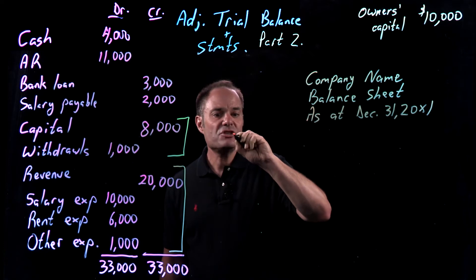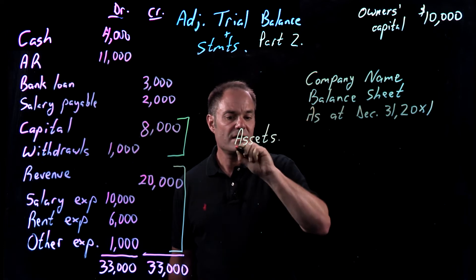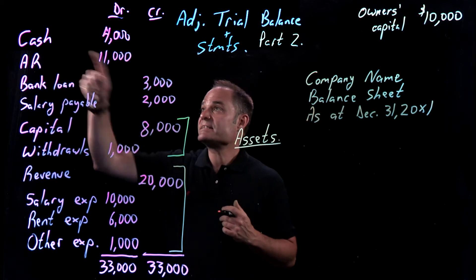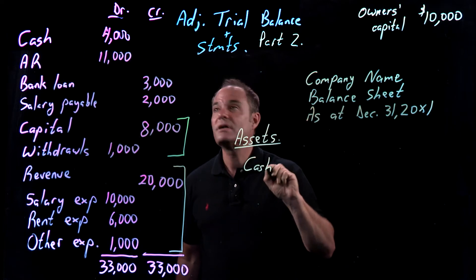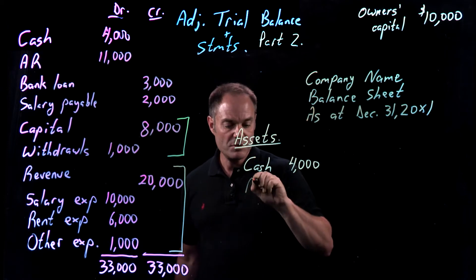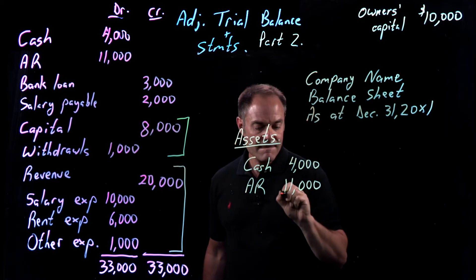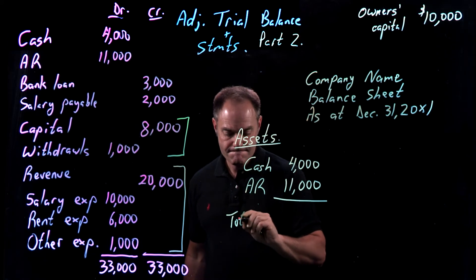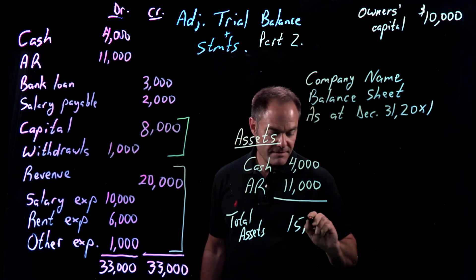Our balance sheet consists of three main parts. On the left side are the assets — remember, left side, debit side. We have two assets: cash, and there's $4,000 of cash, and accounts receivable — I'll just write AR — and that was $11,000. So our total assets are equal to $15,000.